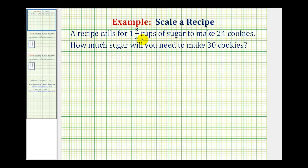From this first sentence we can write a ratio that would be one and three fourths cups of sugar to twenty-four cookies. Notice how we're comparing the amount of sugar to the number of cookies. This must equal the ratio of the amount of sugar needed to make thirty cookies.